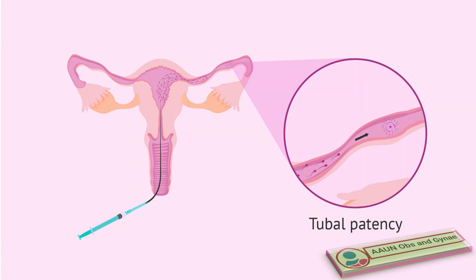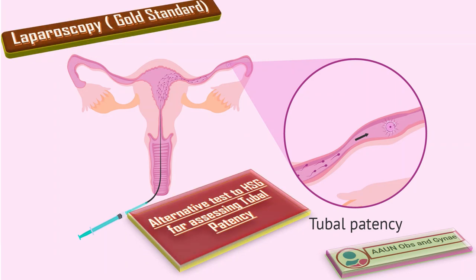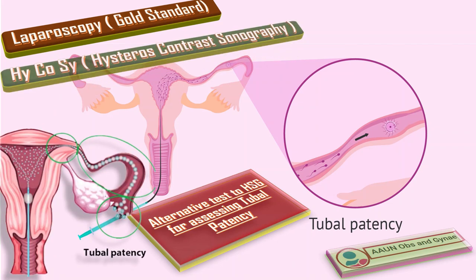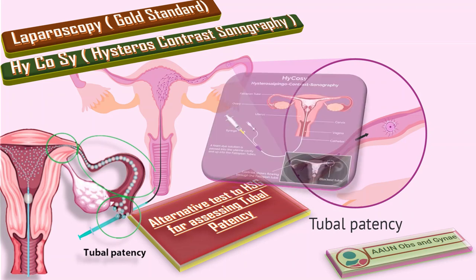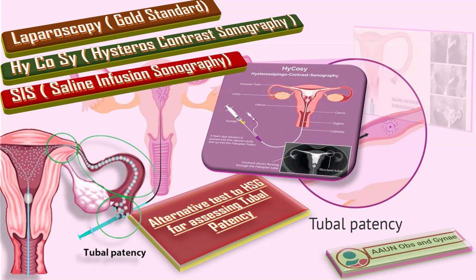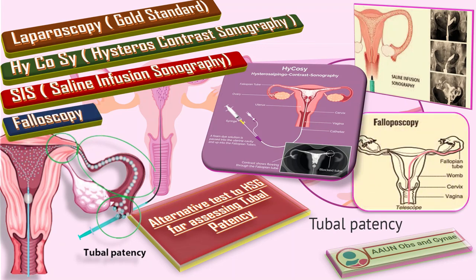The specificity of HSG is about 96% and sensitivity is 65 to 96%. Alternative tests to HSG for assessing tubal patency include: first, laparoscopy, which is the gold standard procedure; second, hysterocontrast sonography; third, saline infusion sonography; and fourth, falloposcopy. That was all about HSG.